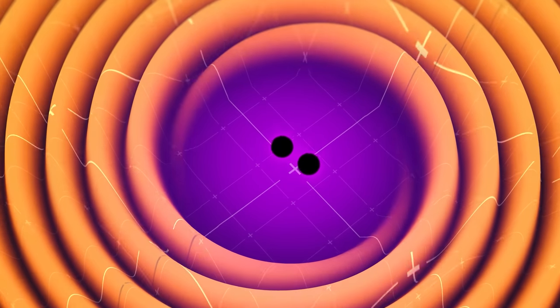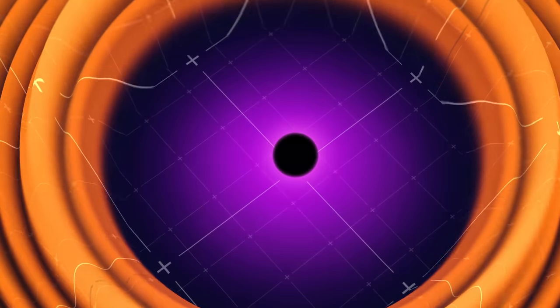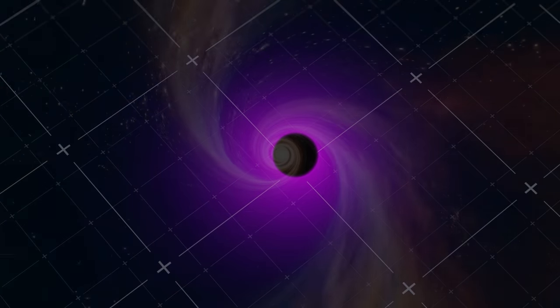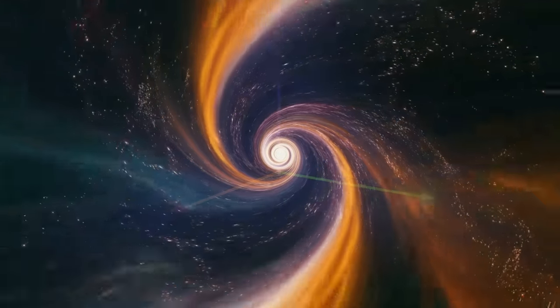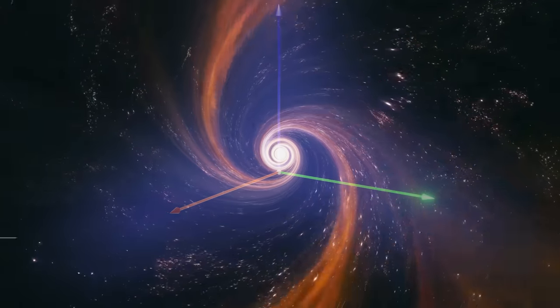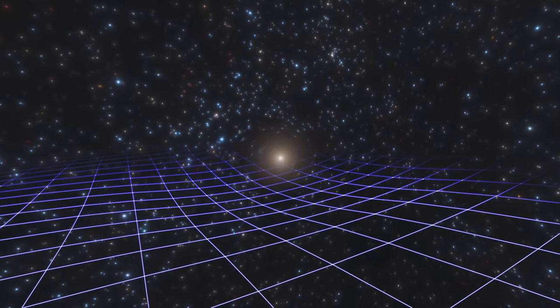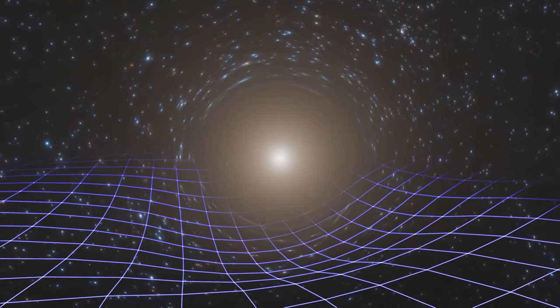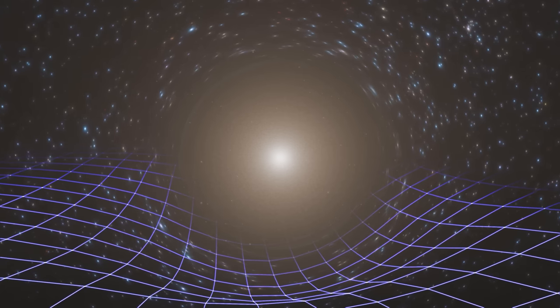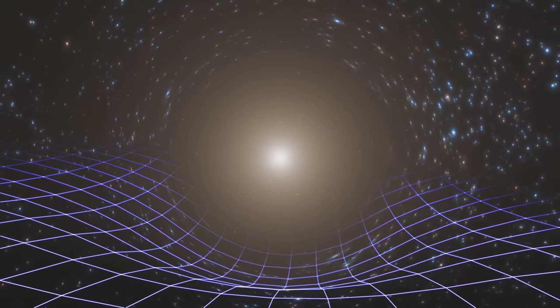Gravitational waves are one of the stranger implications of Albert Einstein's general theory of relativity. As we've covered previously, spacetime is a model that combines the three dimensions of space and the fourth dimension of time into a single manifold. All objects with mass create curvature in spacetime, and objects with a lot of mass create a lot of curvature, which we experience as gravity.